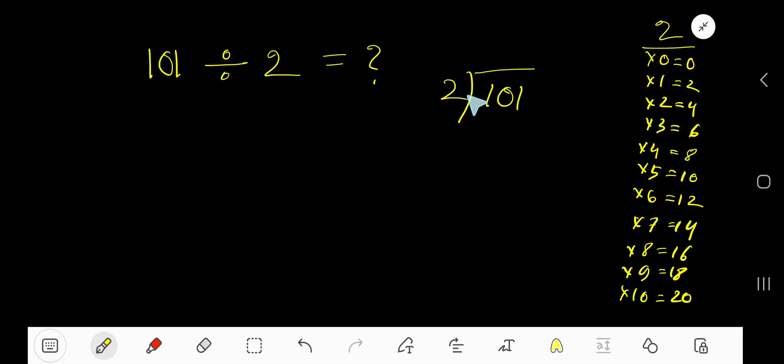101 divided by 2. Here 2 is a divisor, so we need the multiplication table of 2. 2 times 0 is 0, 2 times 1 is 2, 2 times 2 is 4, 2 times 3 is 6, 2 times 4 is 8, 2 times 5 is 10.